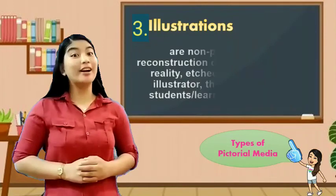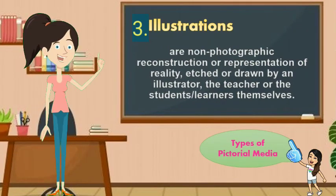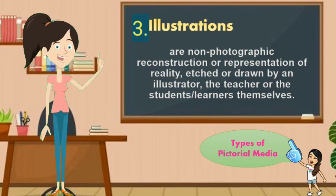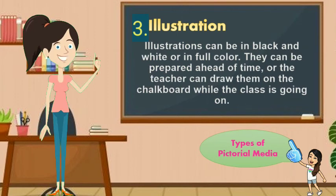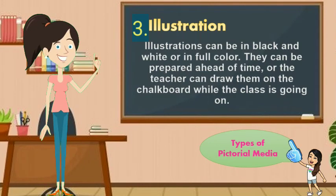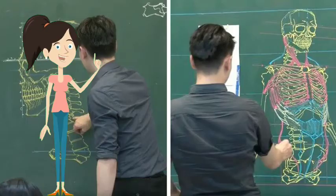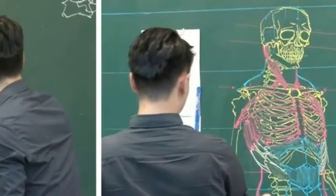The third type of pictorial media are illustrations. These are non-photographic reconstruction or representation of reality, etched or drawn by an illustrator, the teacher, or the students or learners themselves. Illustrations can be in black and white or in full color. They can be prepared ahead of time, or the teacher can draw them on the blackboard while the class is going on. These are examples of illustrations.